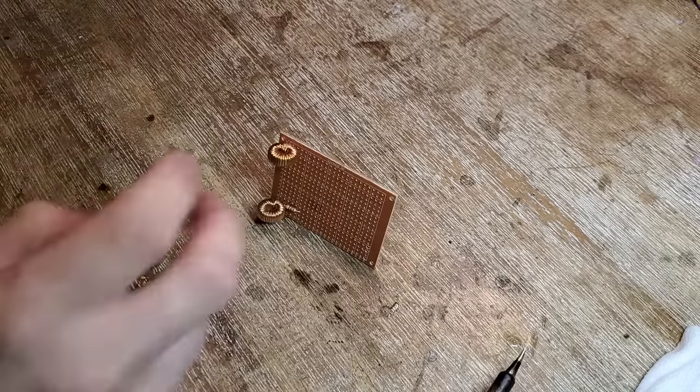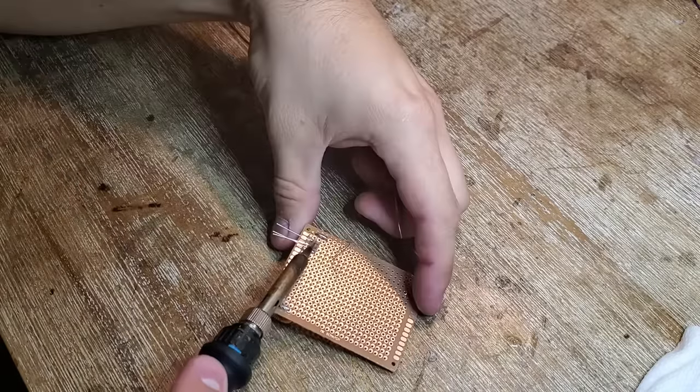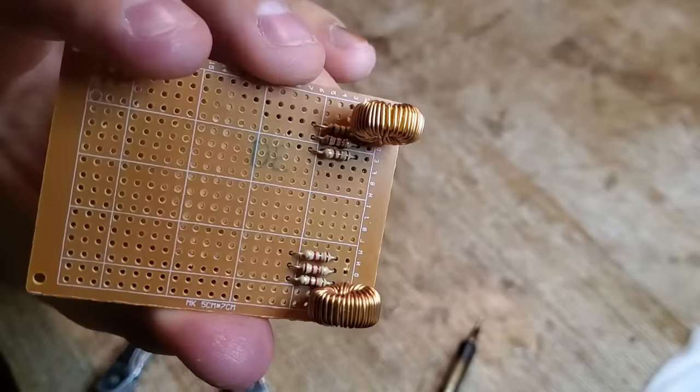Next I solder on the gate resistors, each of which consists of three 1200 ohm resistors in parallel to effectively create a 400 ohm resistor.